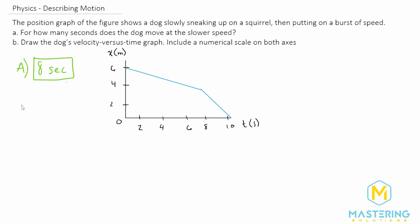And now for part B, what we have to do is we have to figure out what the velocity is for this section and for this section. If you remember, whenever we find the slope of something, the slope is always equal to the rise over the run.